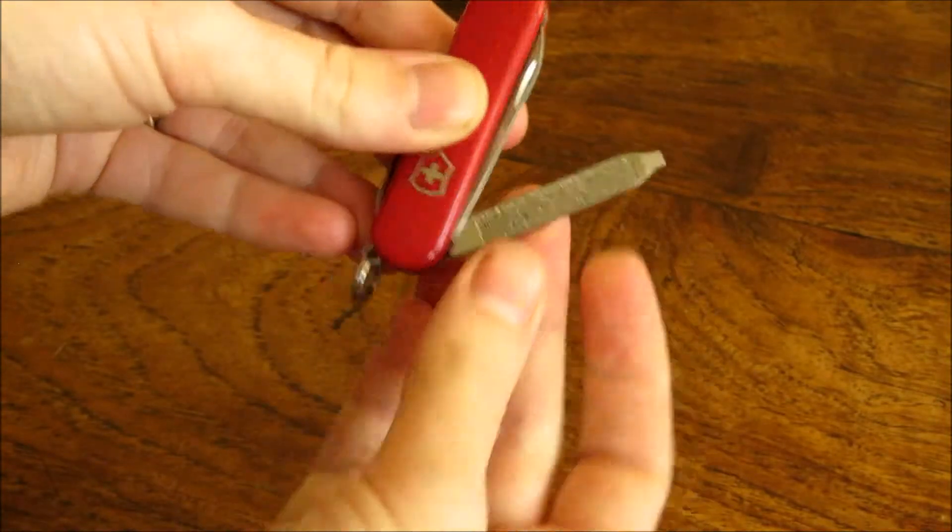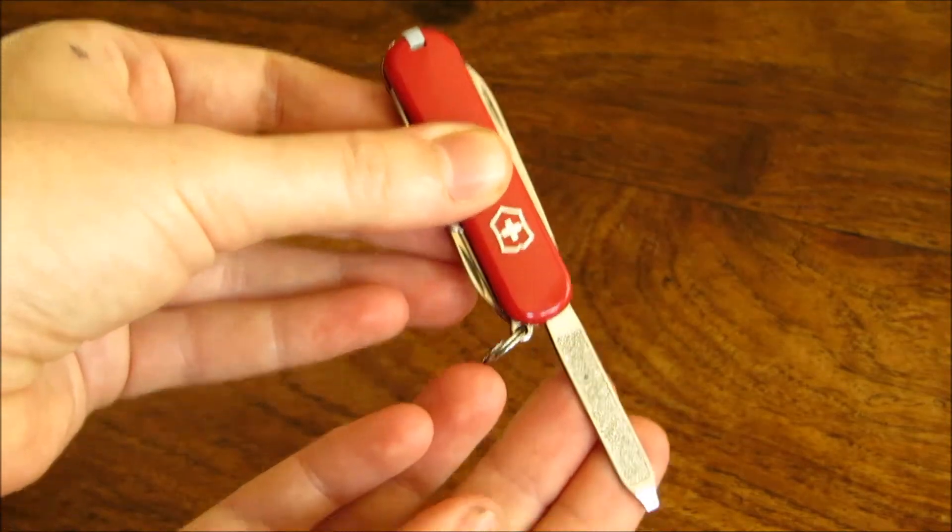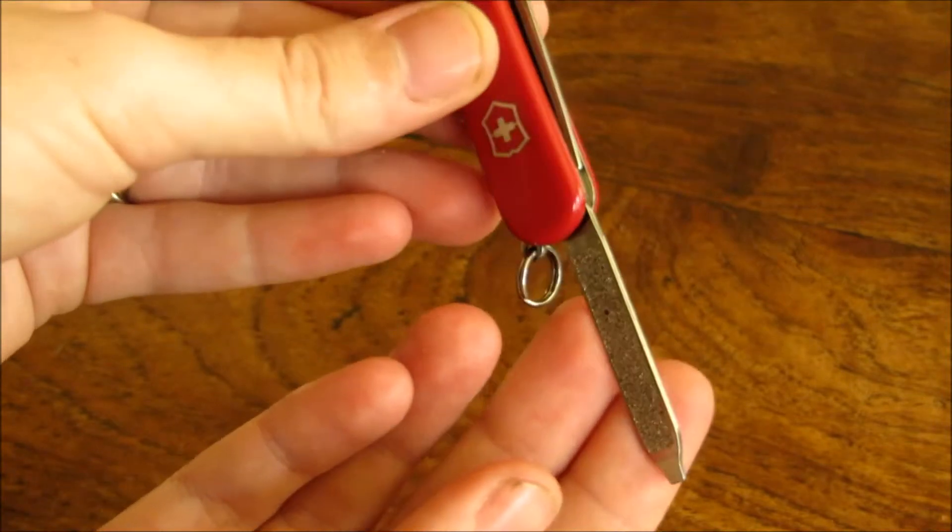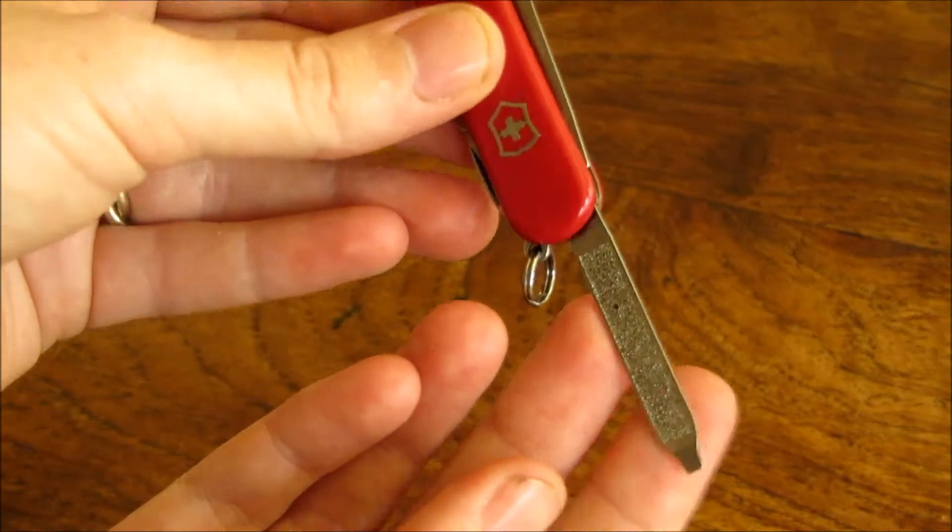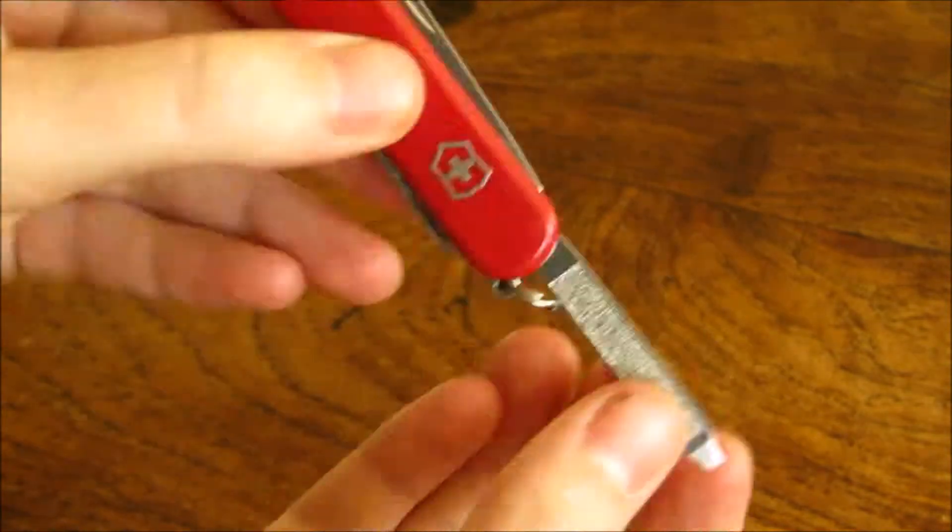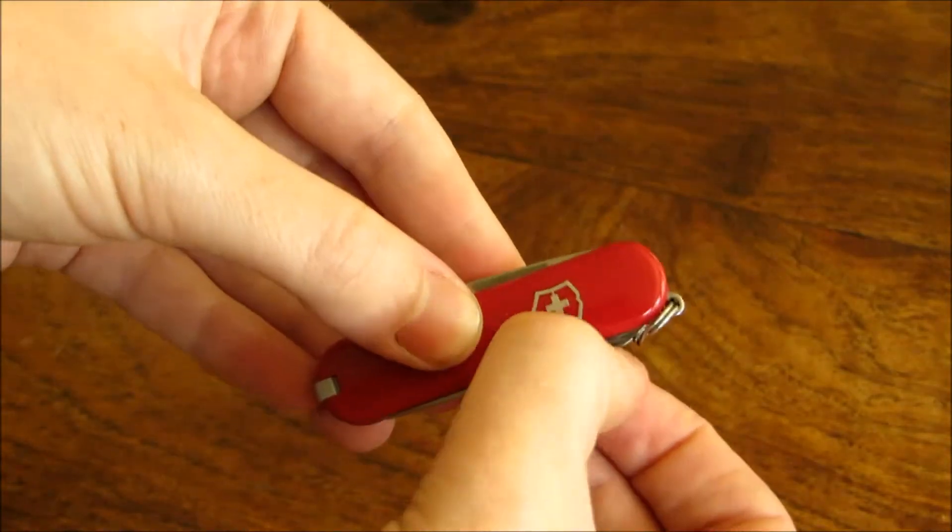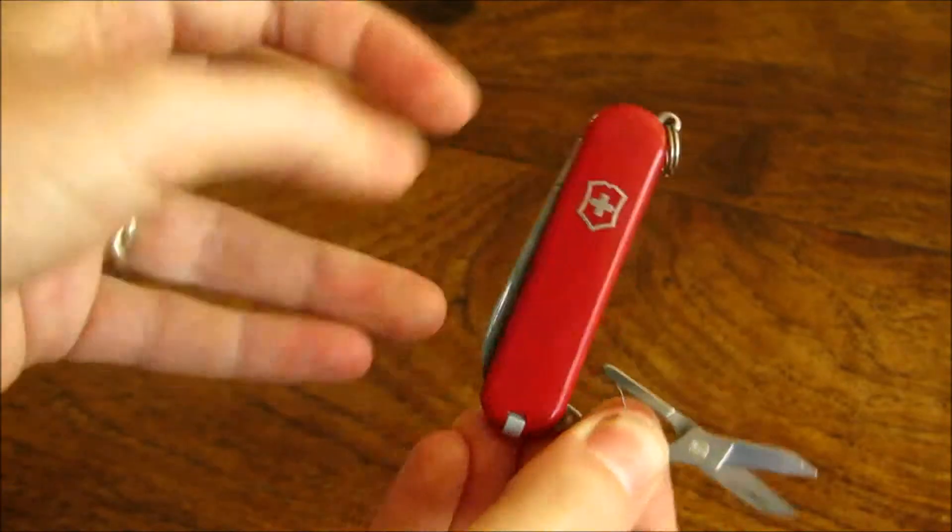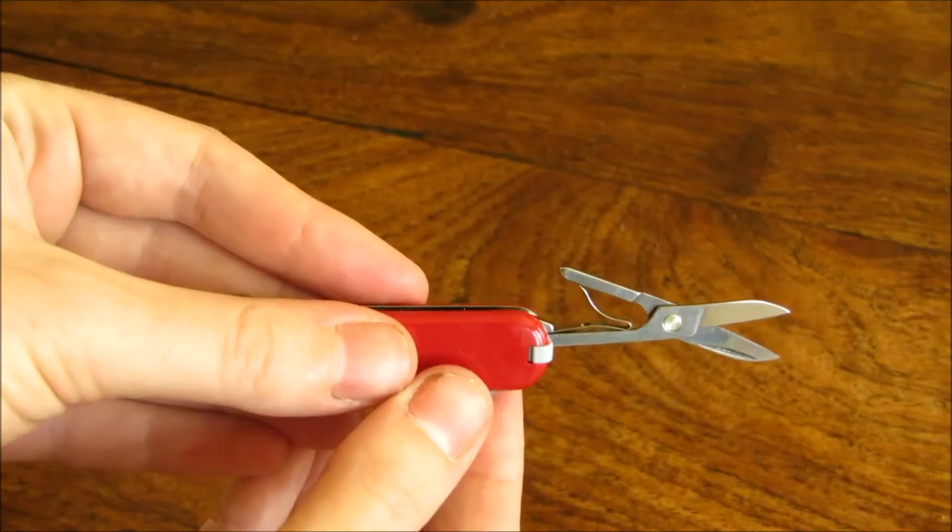a flat nail file, the top of which can be used as a screwdriver. On the other side of the knife there's a cleverly put together mini pair of scissors.